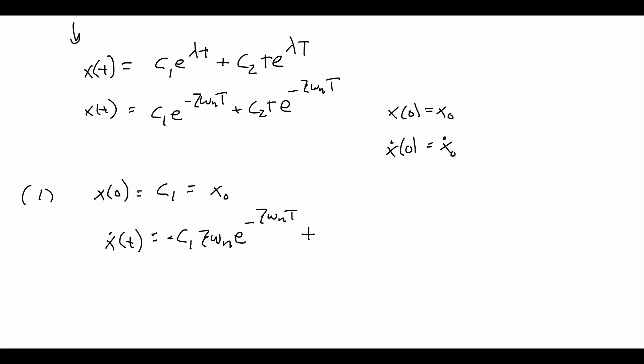Plus, now here, we do have a product rule that we have to employ. So it's going to be, well, the c₂ will come along. The derivative of the first, the time derivative of t is just 1, so e^(-ζωₙt), plus the derivative of the second times the first. So we're going to, again, drop that exponential down, which will be a negative ζωₙ. Then, that's c₂, we still have a t here, and we still have an e^(-ζωₙt).